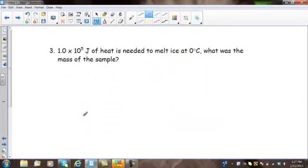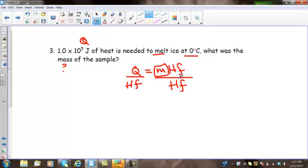Let's try one more. 1 times 10 to the fifth joules of heat. So, right away, I know that's my Q. Is needed to melt ice at zero degrees Celsius. What was the mass? I don't know the mass. We're melting ice at zero. Those are my hints that I'm using Q equals M H sub F. But recall, I have to find mass. These are multiplied, so the opposite of multiplication is division. I divide both sides by H sub F. These cancel. And mass equals Q divided by H sub F.